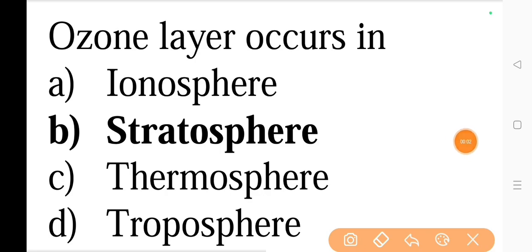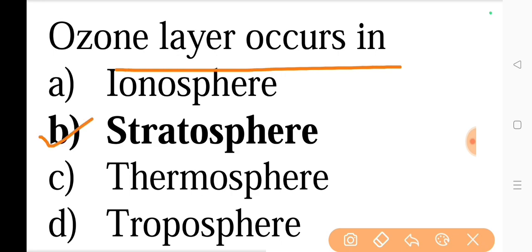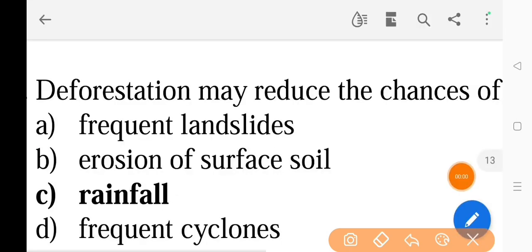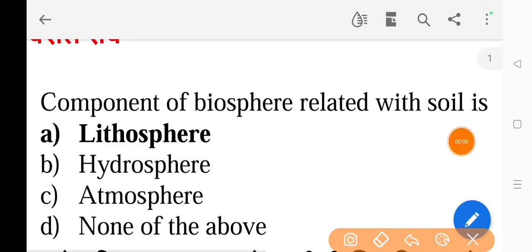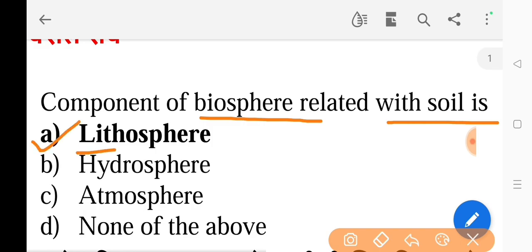Next question: Ozone layer occurs in — the correct answer is option B, stratosphere. Next question: Deforestation may reduce the chances of — the correct answer is option C, rainfall. Next question: Component of biosphere related with soil is — the correct answer is option A, lithosphere.